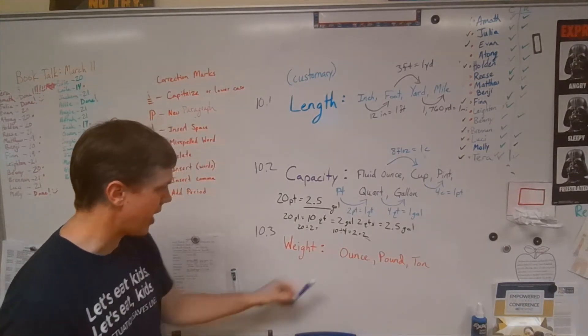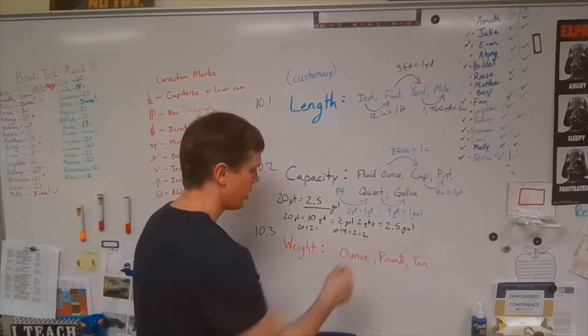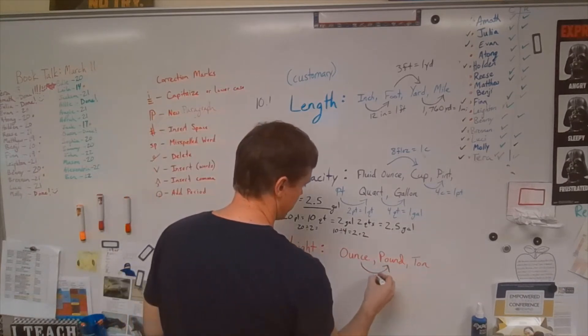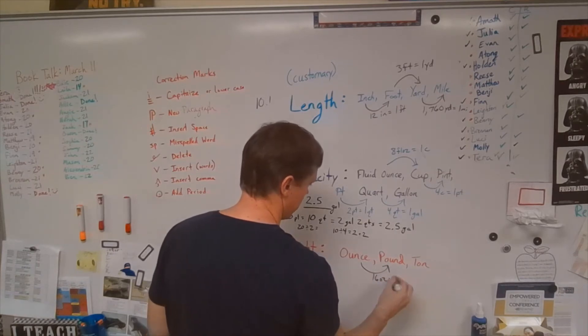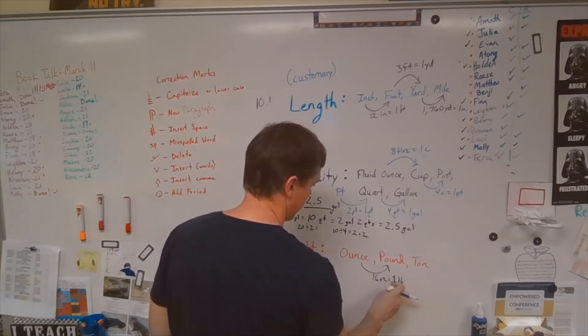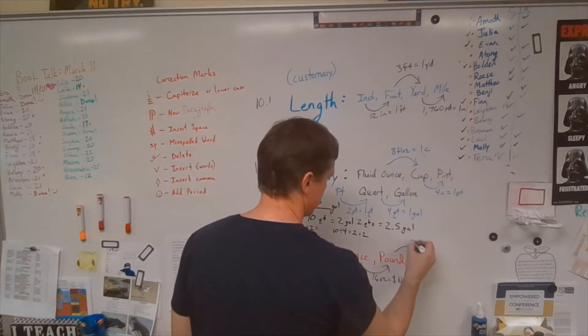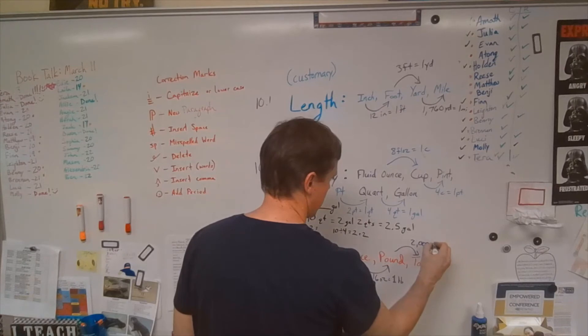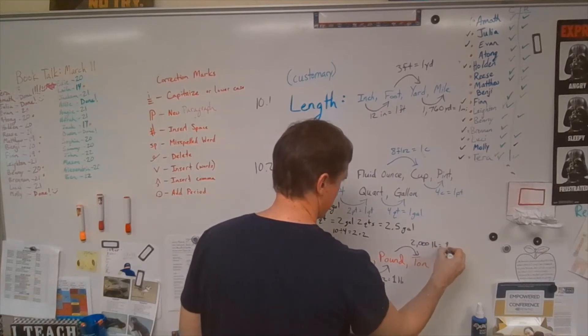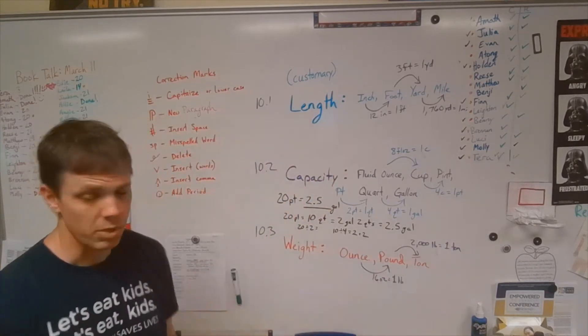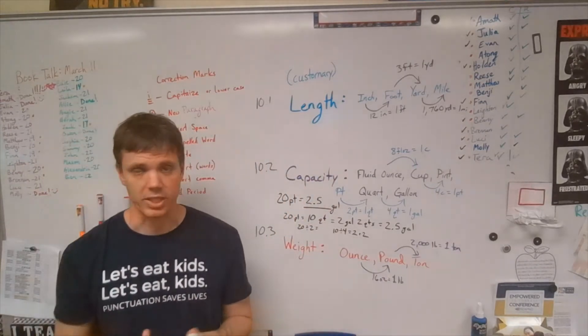Now here we have ounces, pounds, and tons. Okay. So to go from ounces to pounds, it's actually 16 ounces is equal to one pound. LB is the abbreviation for pound. And then 2000 pounds is equal to one ton. Hopefully I haven't screwed up any of these. It's been a while since I've done it and I just kind of briefly glanced at it.